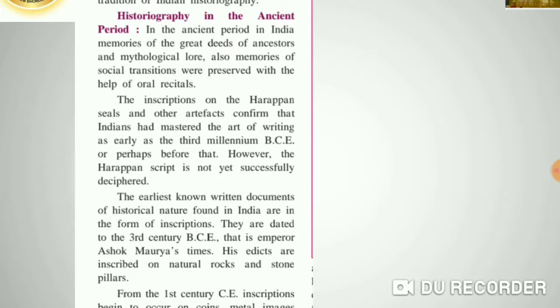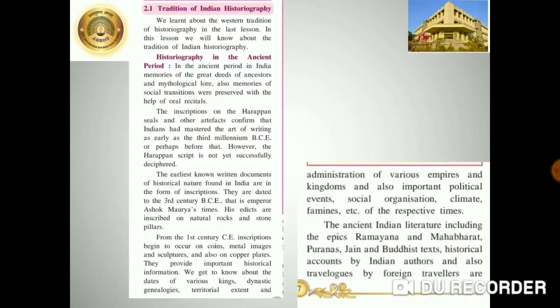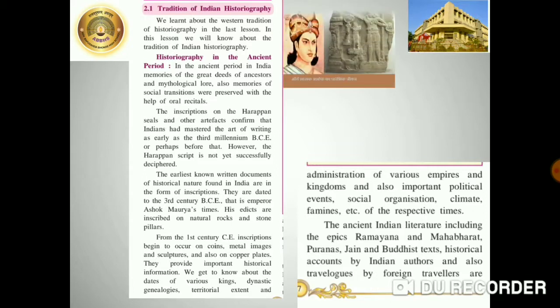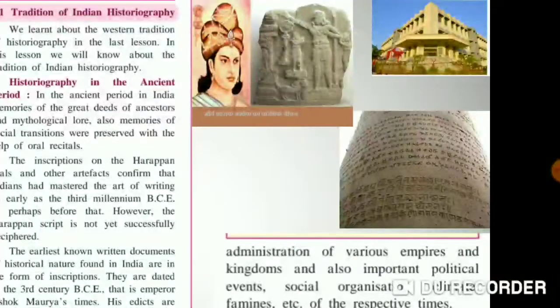These are dated to the 3rd century BC, that is Emperor Ashoka Maurya's time. His edicts are inscribed on natural rock and stone pillars. Edicts are the official proclamations issued by a person in authority, like the king. Look at the picture there on the screen — these are inscribed on the pillars. You can see King Ashoka and the pillars there.